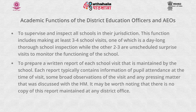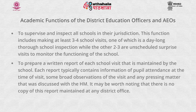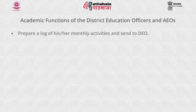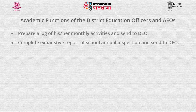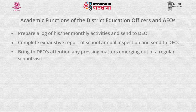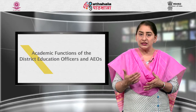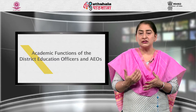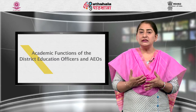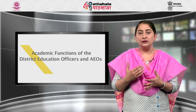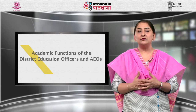Each report typically contains information of pupil attendance at the time of visit, some broad observations of the visit, and any pressing matter that was discussed with the head master. It may be worth noting that there is no copy of this report maintained at any district office. They prepare a log of monthly activities and send it to the DEO, complete an exhaustive report of school annual inspection and send it to DEO, and bring to the DEO's attention any pressing matters emerging from a regular school visit. Matters such as teacher vacancies, infrastructure, and issues such as no toilets and inadequate space for learners in classrooms are considered routine and not urgent enough to be reported outside of the annual inspection report.